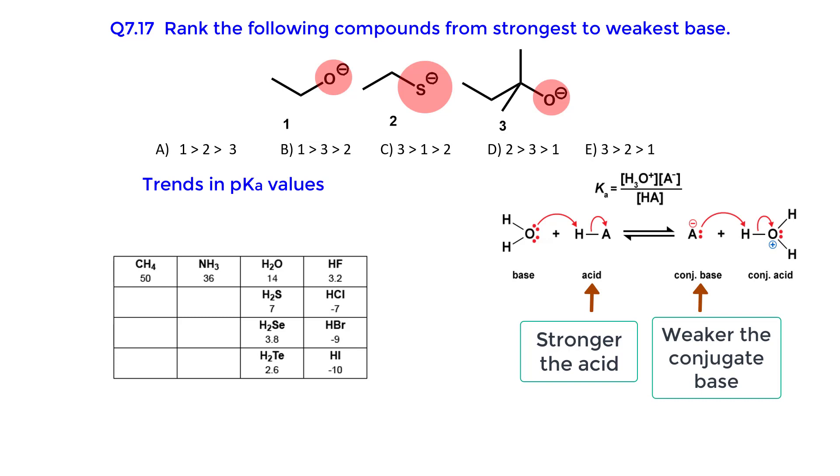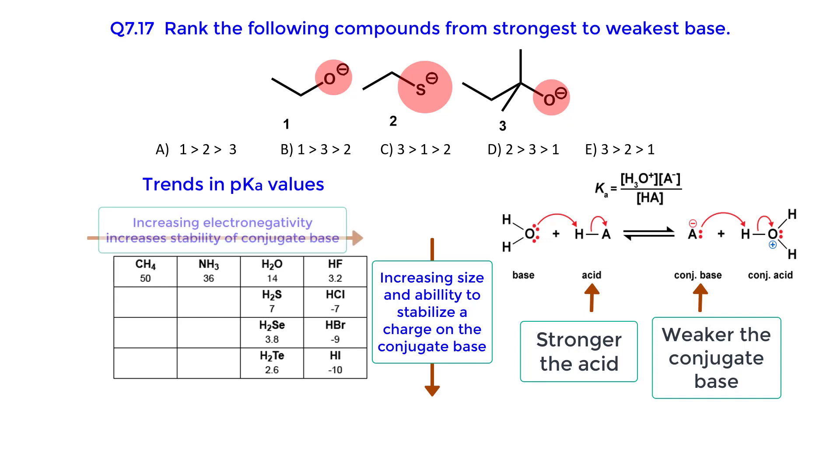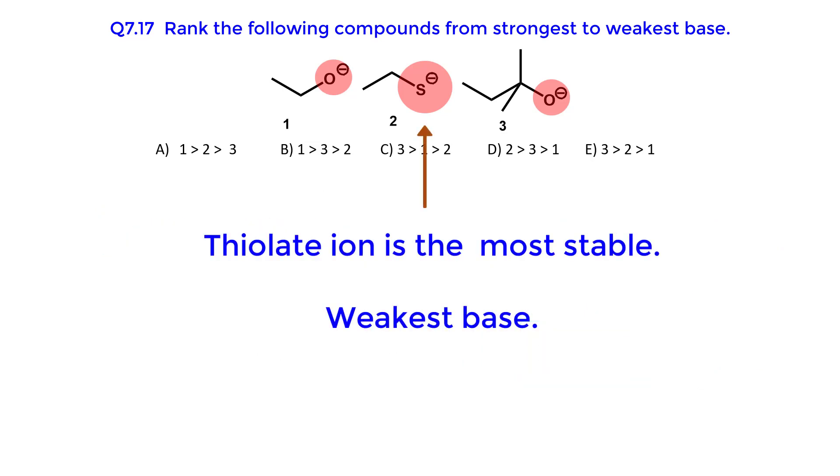When comparing atoms in the same column in the periodic table, size has a greater stabilizing effect than electronegativity, because the charge of the conjugate base is spread over a larger volume. When comparing atoms in the same row, electronegativity is more important. Thus, the thylate ion is the most stable, or the weakest base.